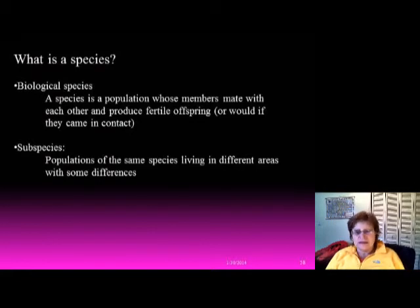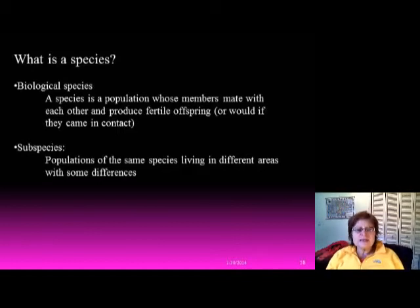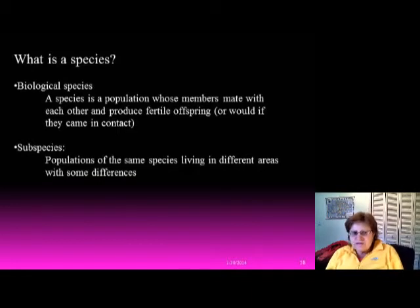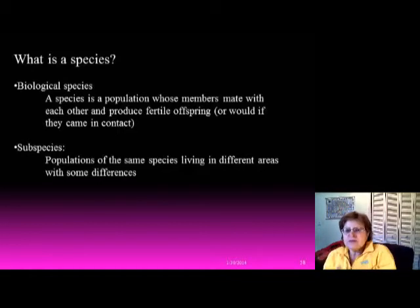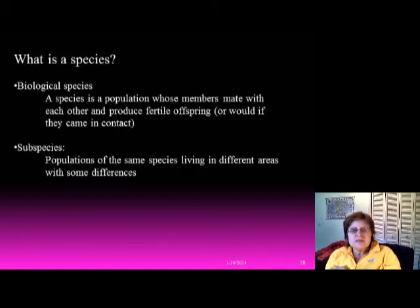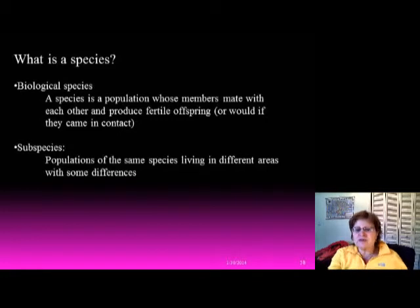Now let's define what a species is. A biological species is a population whose members are able to mate with each other and produce fertile offspring, or would if they came into contact. In the human population, essentially any two individuals can reproduce a fertile offspring — that's what makes us a biological species.